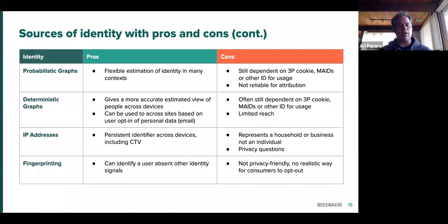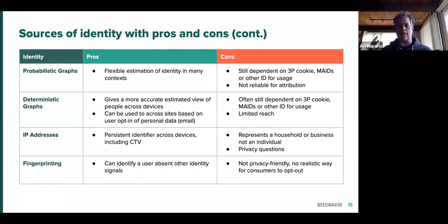Other forms of identity include probabilistic and deterministic graphs, and these are not mutually exclusive. A probabilistic graph basically takes a bunch of IDs of different kinds and stitches them together based on some statistical method. It's very flexible and easy to use, but in many cases it's still dependent on third-party cookies or some other ID. While probabilistic graphs are very useful, as a form of pure identity they really need to be combined with something else.